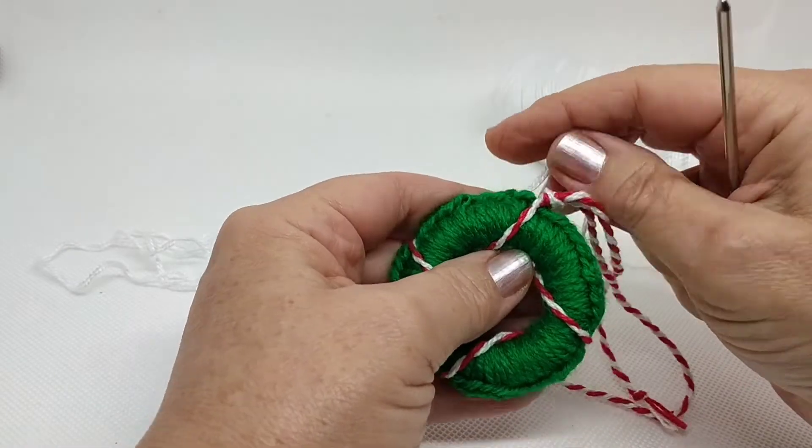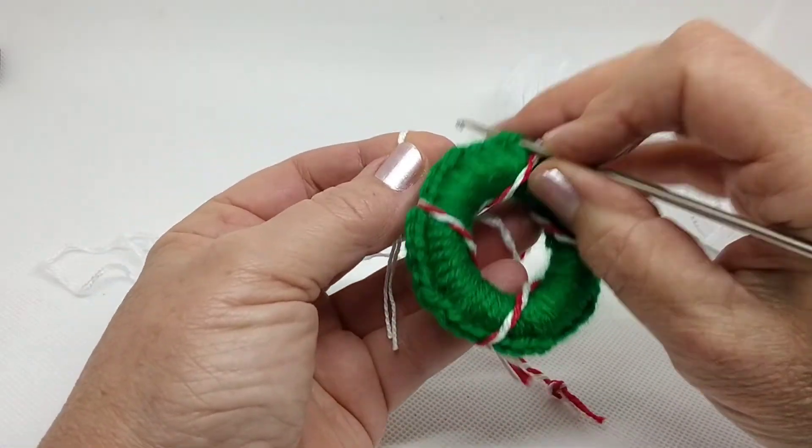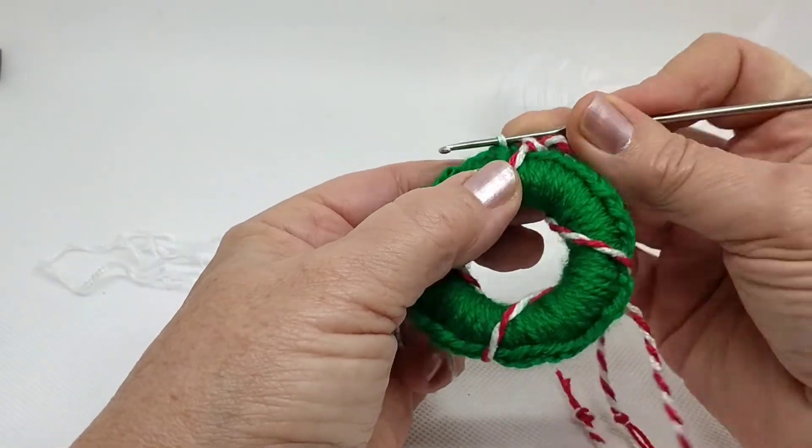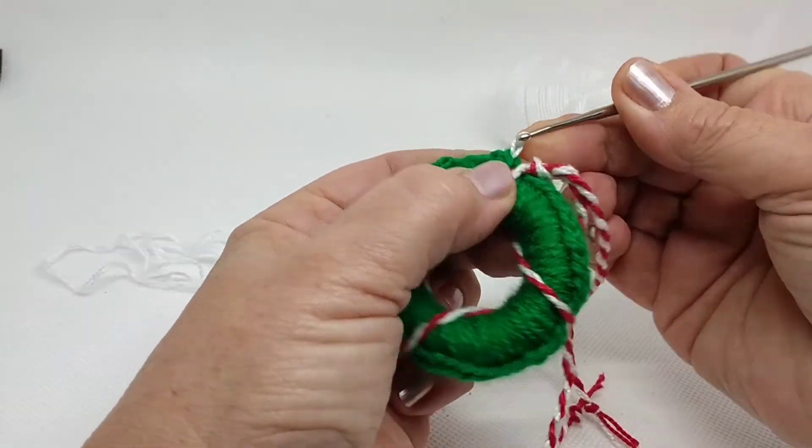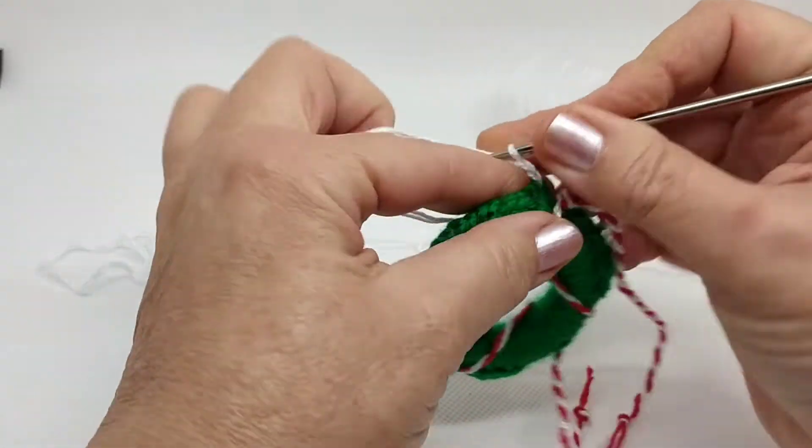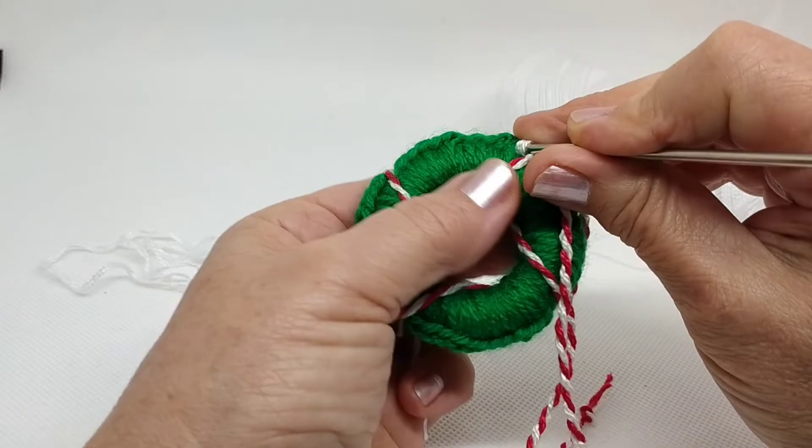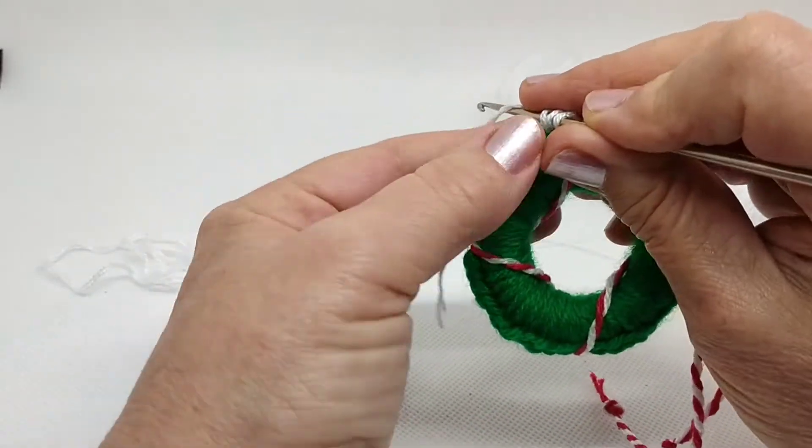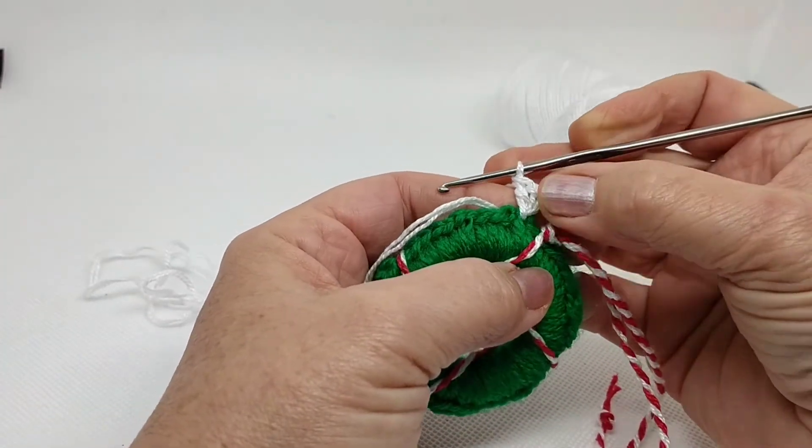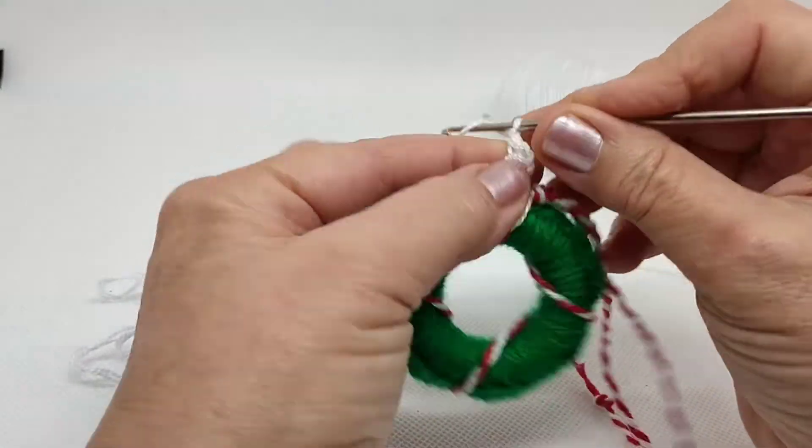Ahora con nuestro hilo blanco voy a hacerle un borde aquí. Enganchó en esta cadeneta y hago tres cadenetas para hacer un punto alto en este mismo punto. Tengo tres lazadas, saco de dos en dos. Ya tengo dos puntos altos o varetas. Ahora voy a hacer tres cadenetas.